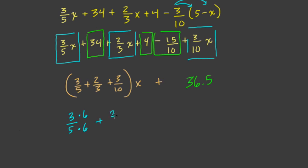2 thirds, multiply numerator and denominator by 10 this time to get to 30. Remember, we're trying to get to 30. And then finally, 3 over 10, multiply numerator and denominator by 3 to get to 30. And again, this is all in terms of x, plus 36.5.